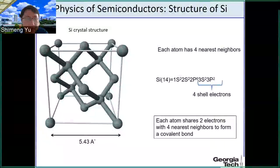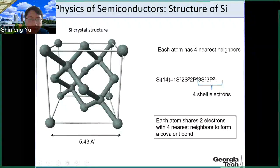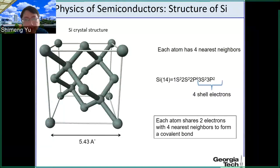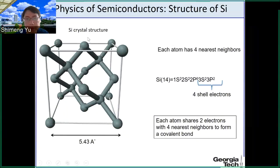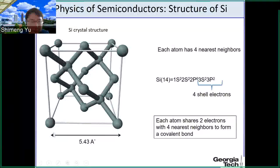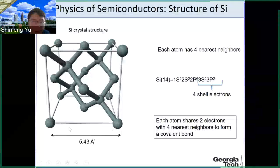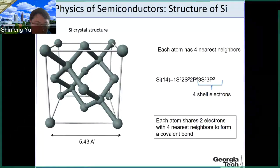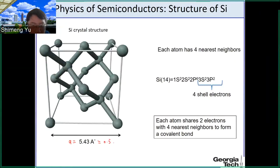Let's look at the silicon crystal structure. This represents the silicon atom. You have seen a similar crystal structure in the last lecture about copper. The silicon crystal structure is different from copper's. We still have this cube, and the lattice constant — the length of one side of the cube — is about 5.43 Ångströms, or 0.543 nanometers.